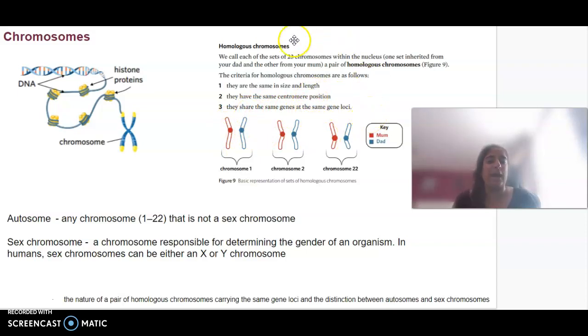In our sex chromosomes, we have 23 chromosomes, but all of our other cells will contain 46 chromosomes, half from mum, half from dad.